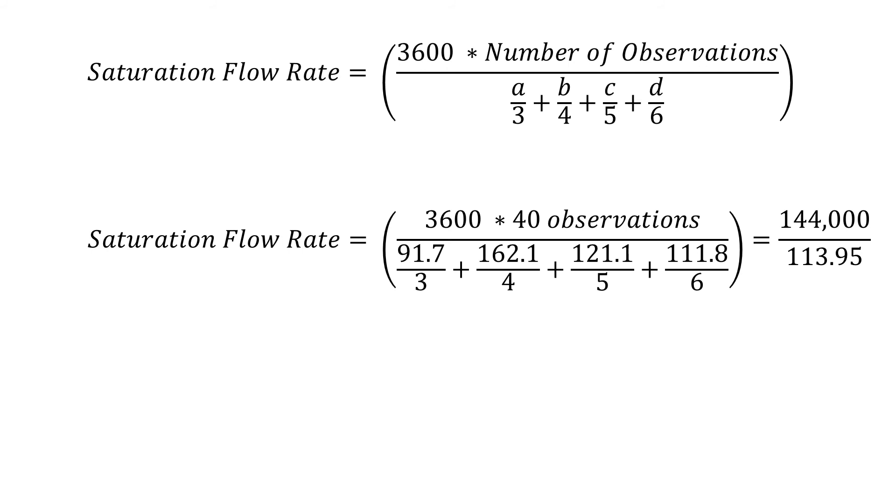So plugging in our numbers, 3600 times 40 observations, over 91.7 divided by 3, plus 162.1 divided by 4, plus 121.1 divided by 5, plus 111.8 divided by 6, gives us 144,000 divided by 113.95.